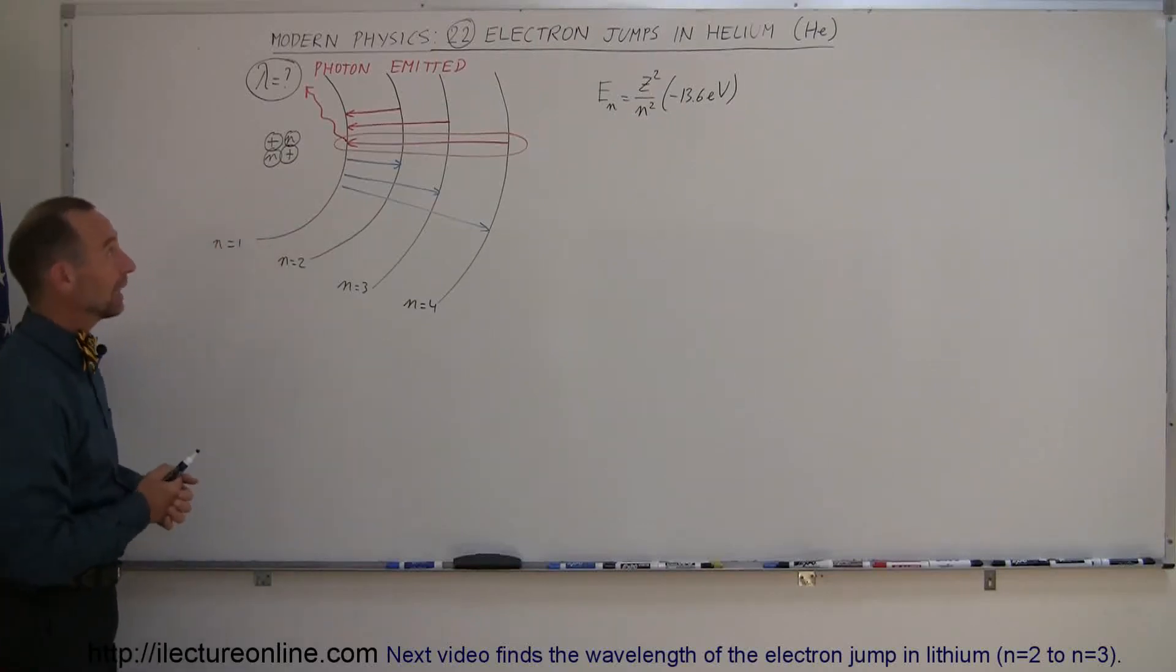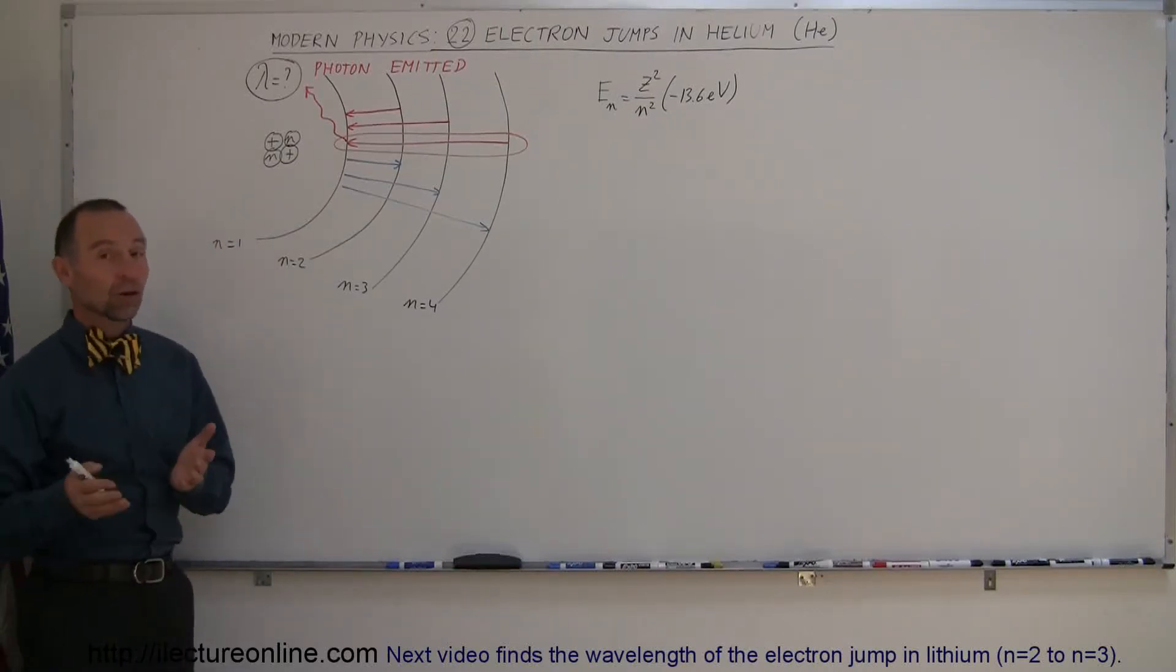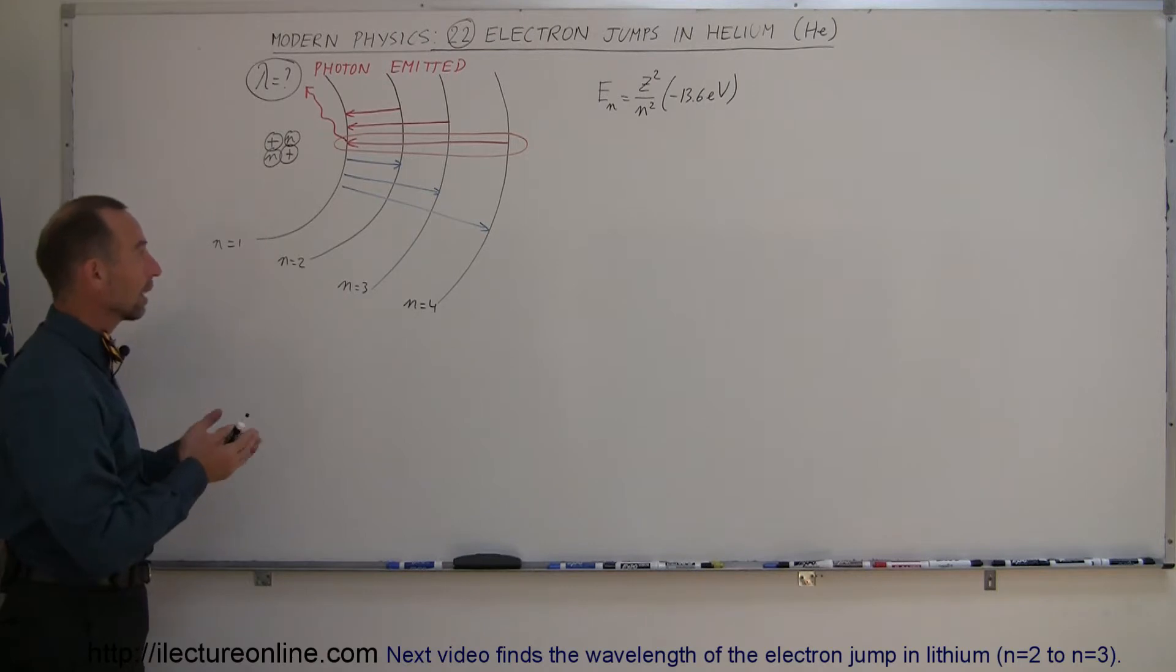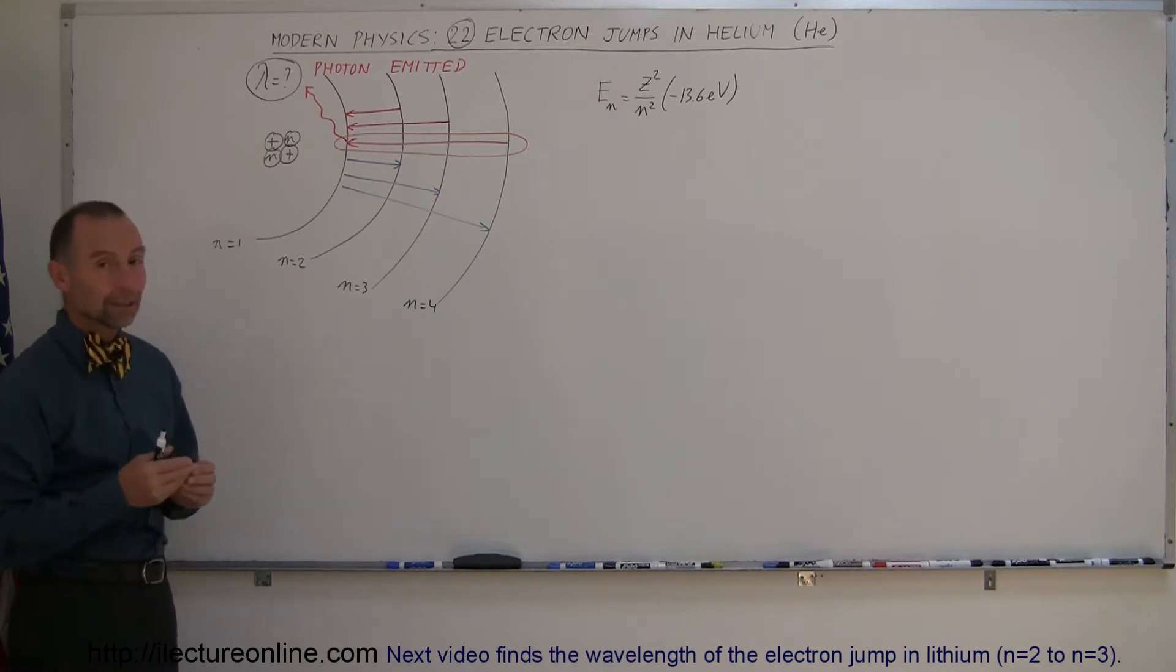Our next exploration in the concept of electron jumps in the orbits around the nuclei of atoms, we're now going to look at something a little bit more complicated. Instead of hydrogen, we're now going to look at helium. And a helium atom, of course, is a little bit different.